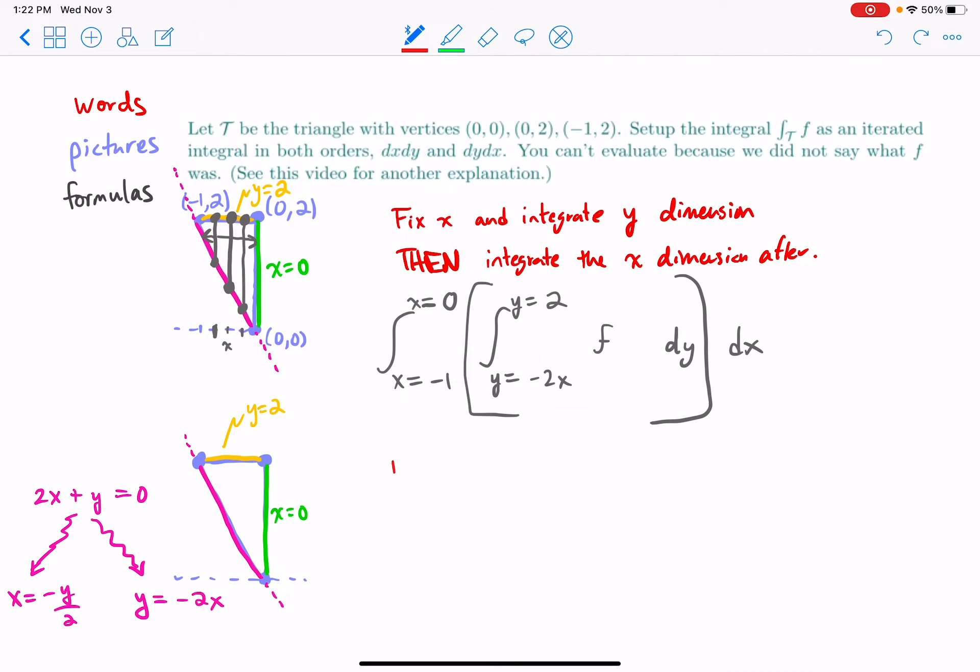There's another way we could do it. We could first fix y and integrate the x dimension first. So if I fix a y value, that's fixing a height, right? And so now I'm going to slice like this. And now my slices look like this. And so if I fix a y, like at this height y, then I need to know where x goes.